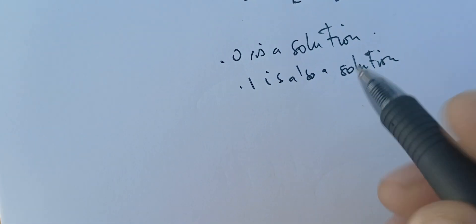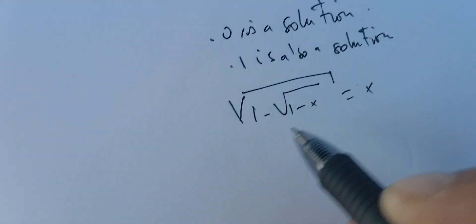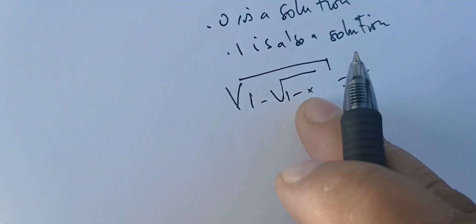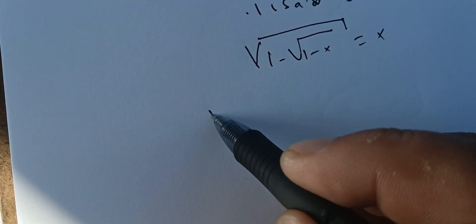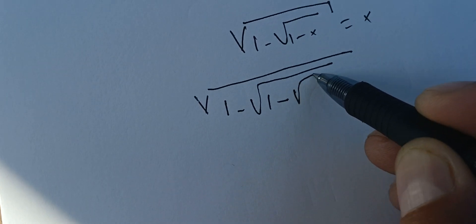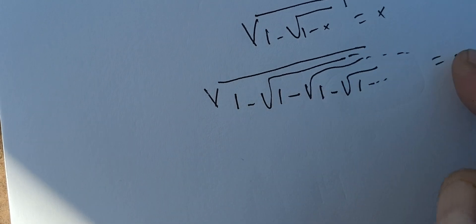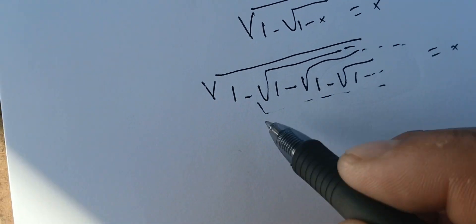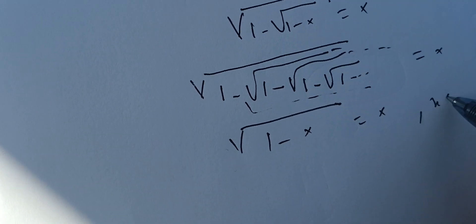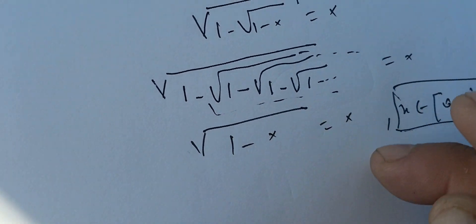Next, we try to find more solutions. If we write 1 − √(1−x) = x and plug x in repeatedly, we notice that √(1−x) = x as well. So we have √(1−x) = x, with x in (0, 1). This condition is crucial — this is where the function is defined.